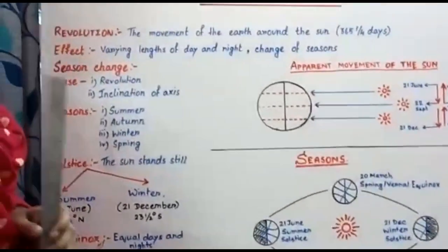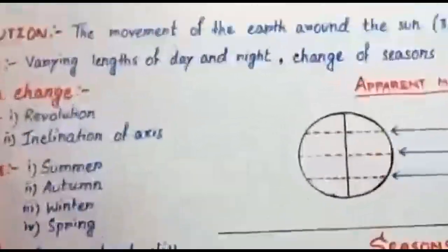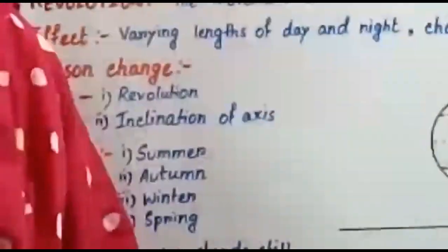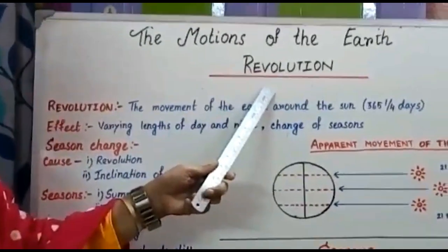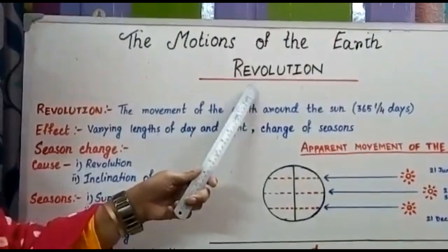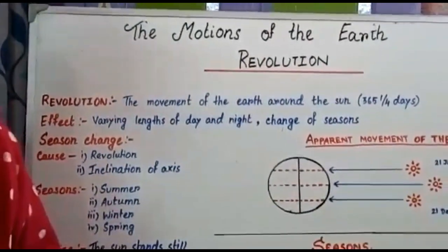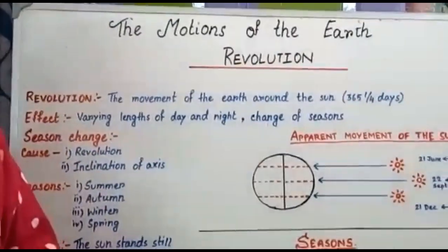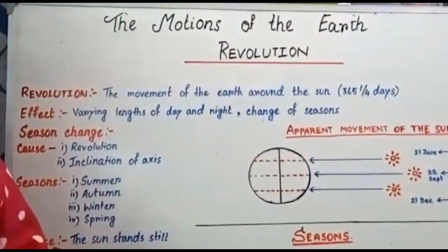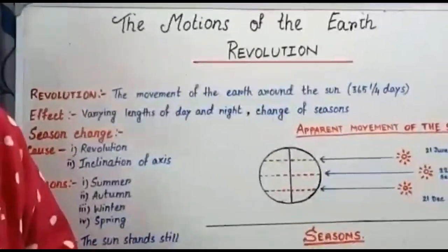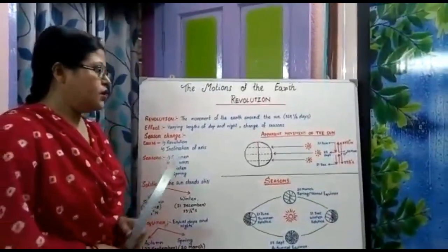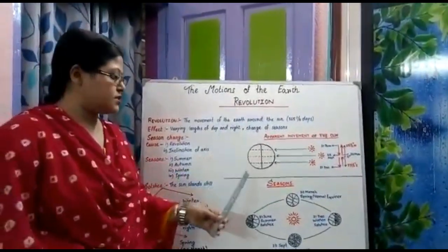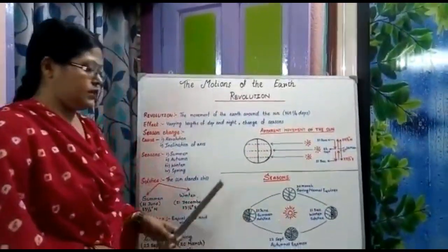Season change depends on some factors. First, obviously, the motion of revolution, and second is the inclination of the earth's axis. We have already discussed that the earth's axis is not a straight line but is slightly inclined. Due to these two reasons, season change is occurring.